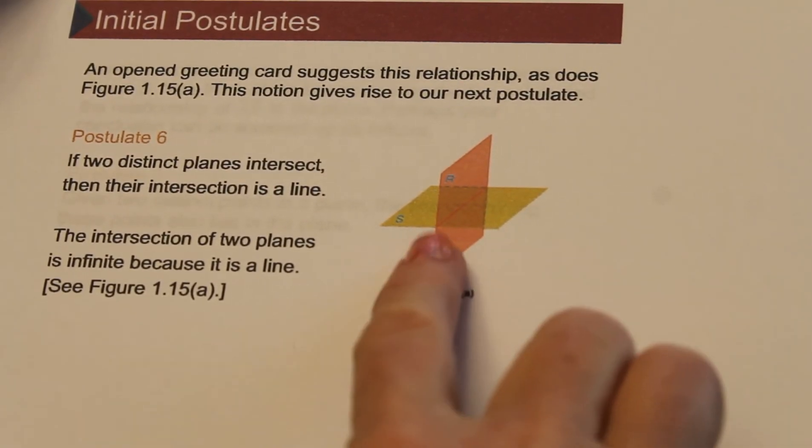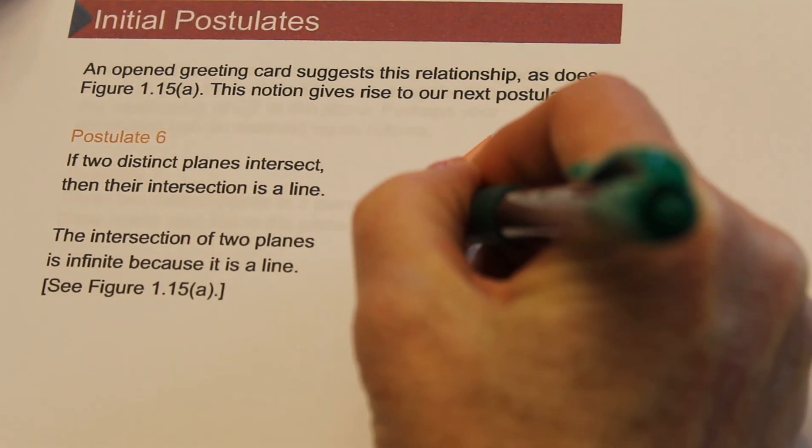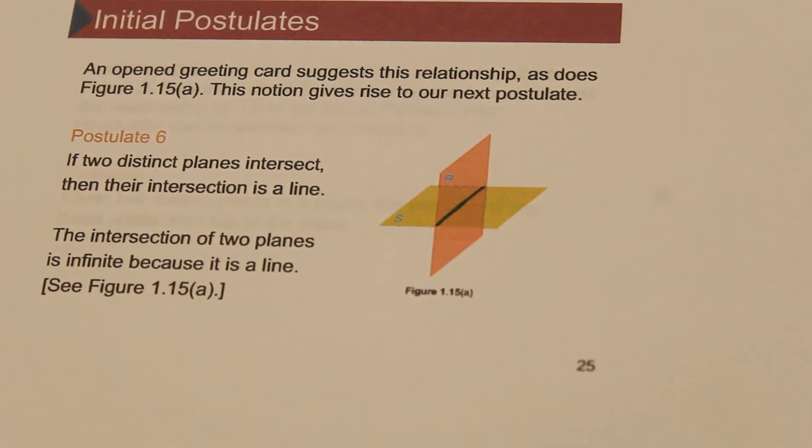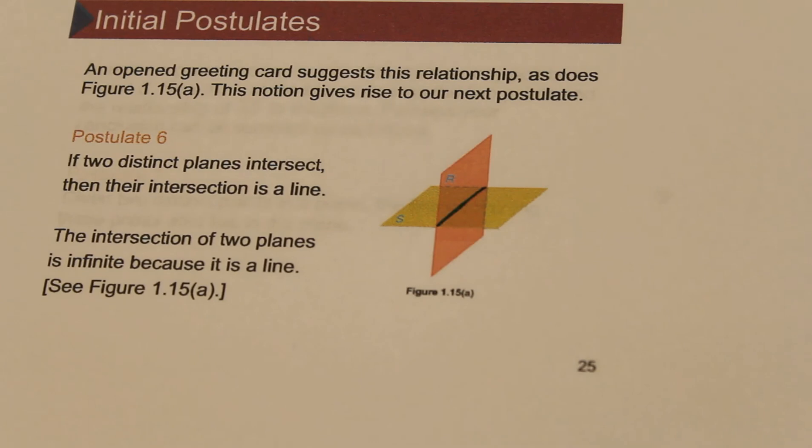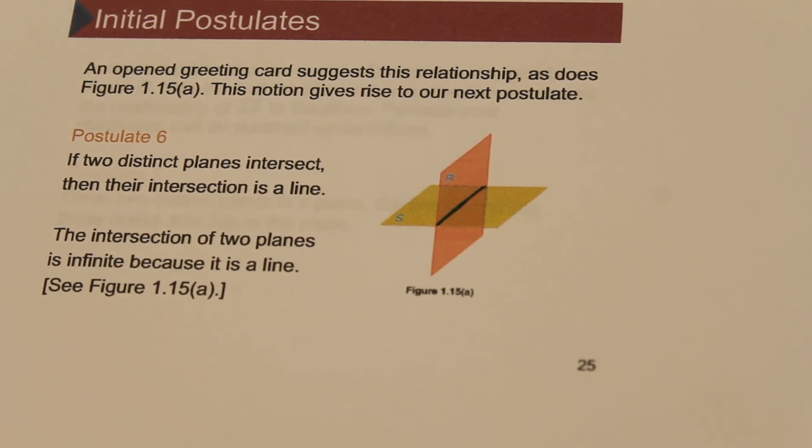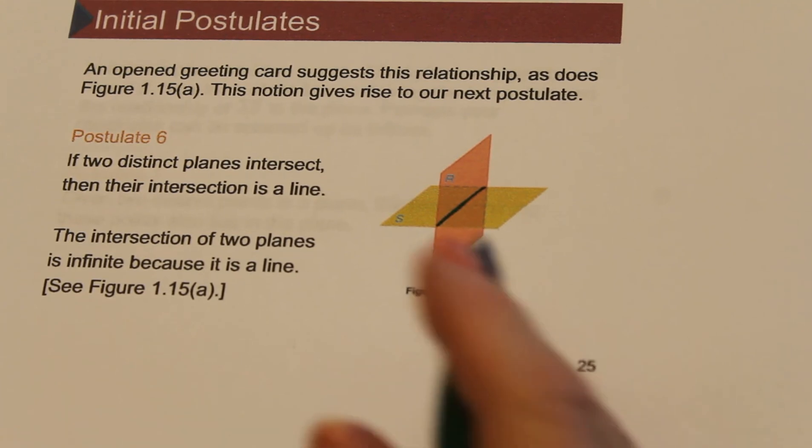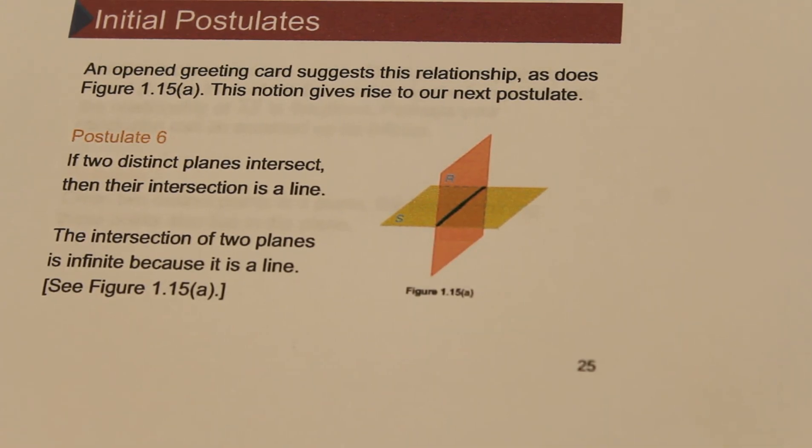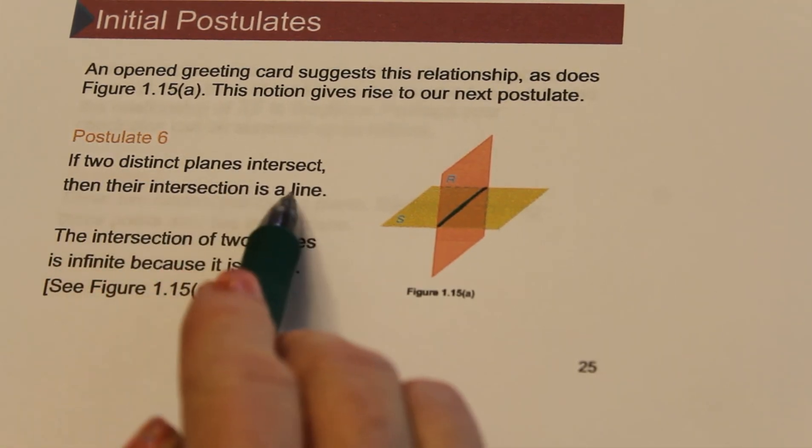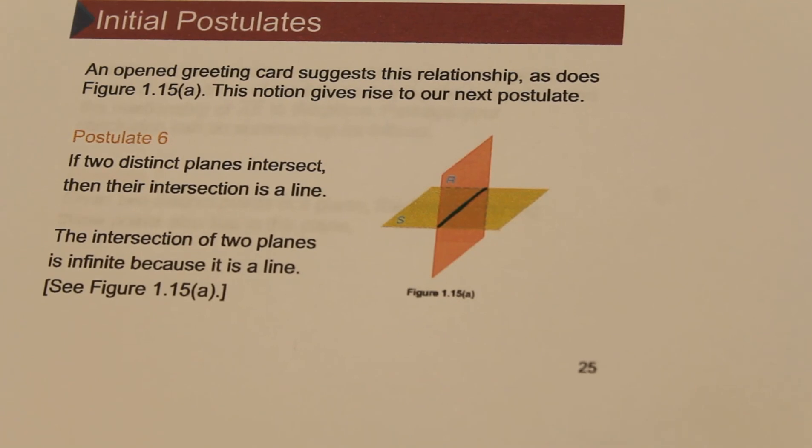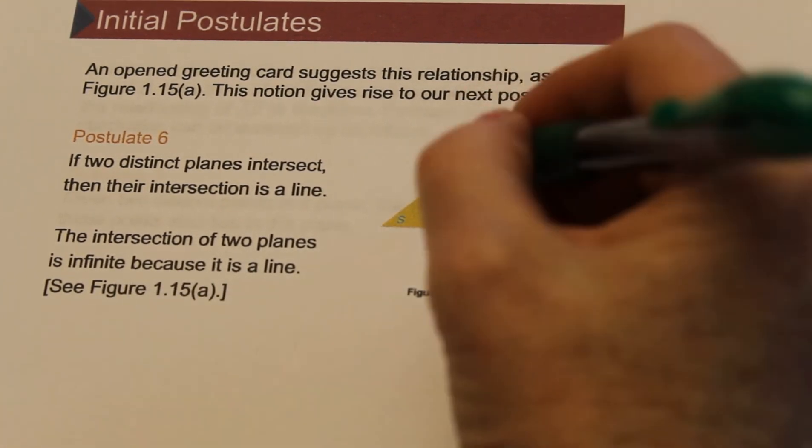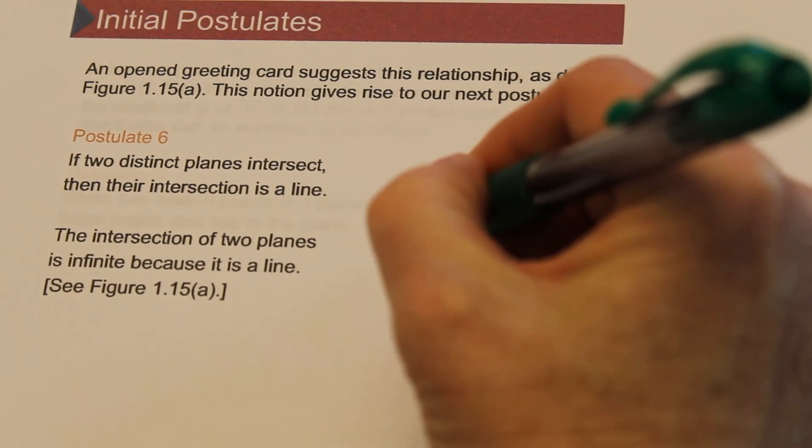So here are two planes intersecting. And when two planes intersect, they intersect at a line. You can think of when you open a greeting card, the front of the card is one plane and the back of the card is another plane, and they intersect at the fold. So if two planes intersect, they intersect at a line, and the intersection is actually infinite because these are actually lines. They go on and on.